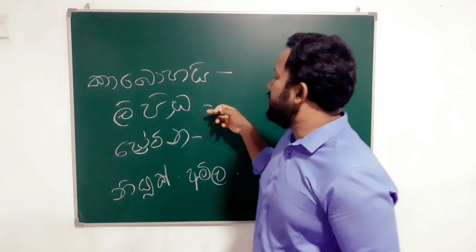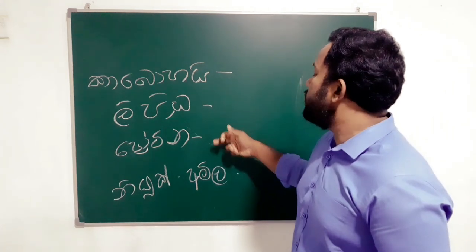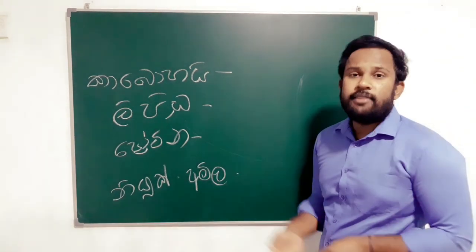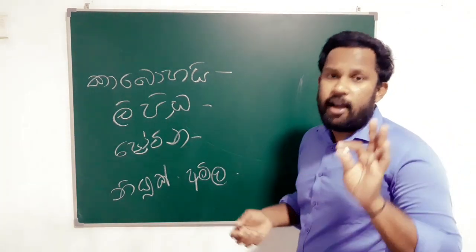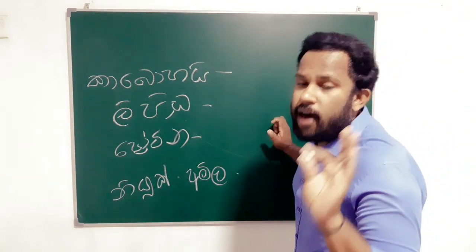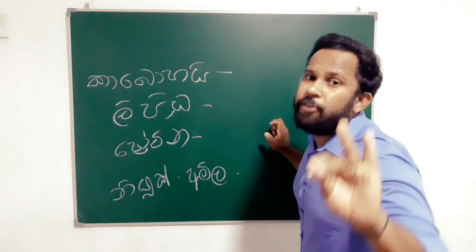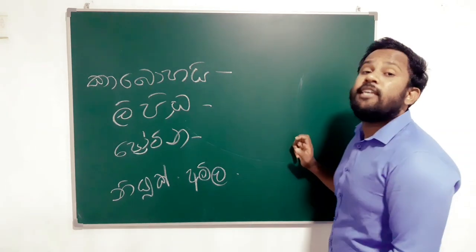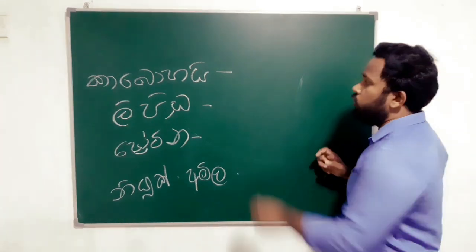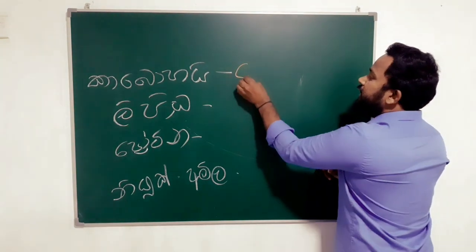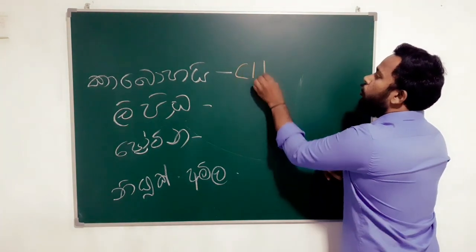Carbohydrates, lipids, protein, and nucleics. We are going to talk about carbon, hydrogen, and oxygen — CHO.